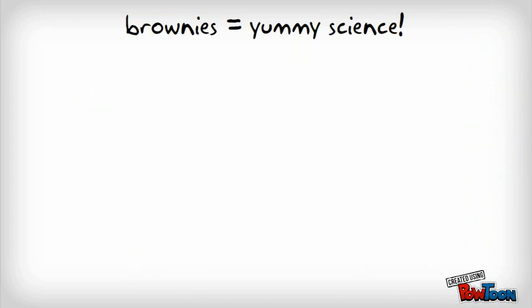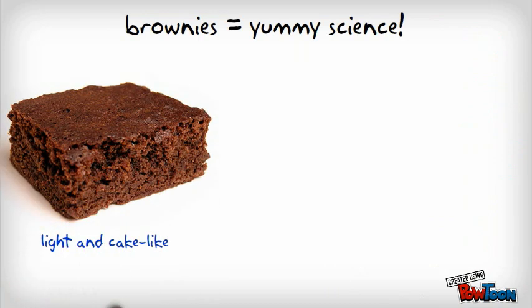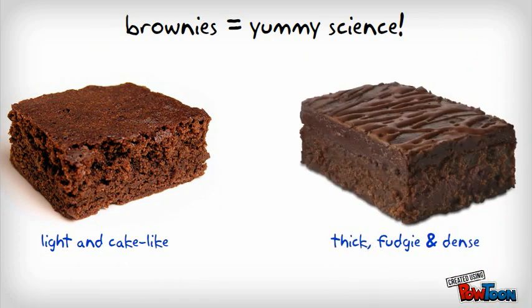Brownies are another great example of density. Do you prefer your brownies light and cake-like or thick, fudgy, and dense? I like the light and cake-like ones myself, but the difference between the two really is just how much matter is packed into that brownie.